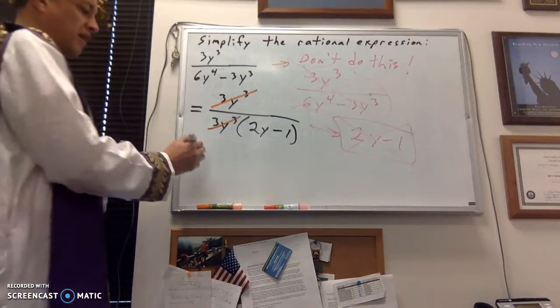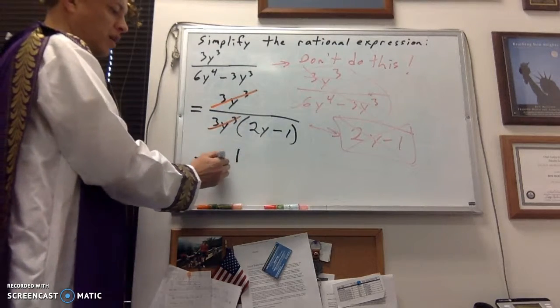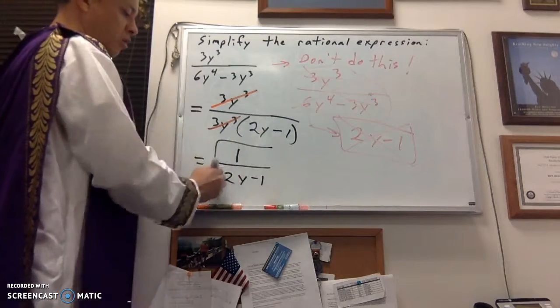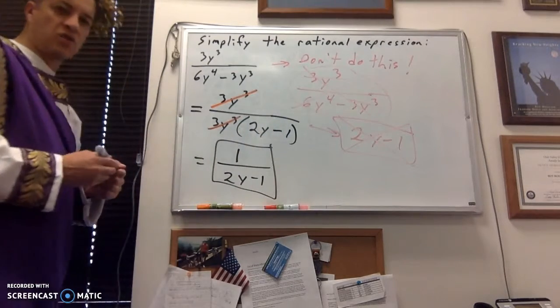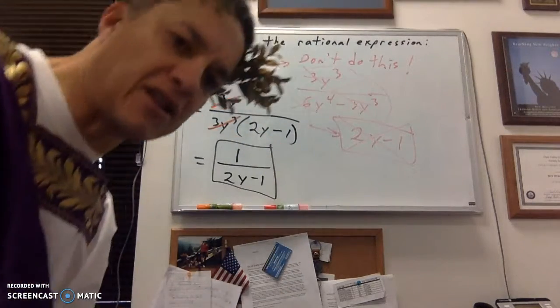Something's always going to be left. If it looks like everything drops out in the numerator, there's always the number 1, alright? So, my answer here is actually 1 over 2y minus 1. So, now it's factored and reduced and simplified and all that good stuff.